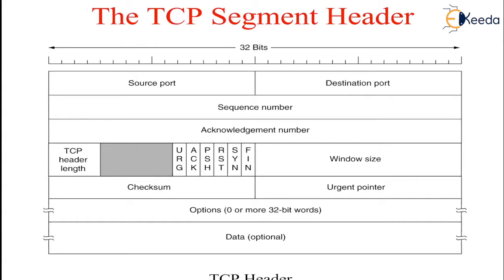the segment does not contain an acknowledgement, so the acknowledgement number field is ignored. The push bit indicates pushed data. The receiver is hereby kindly requested to deliver the data to the application upon arrival and not buffer it until a full buffer has been received.